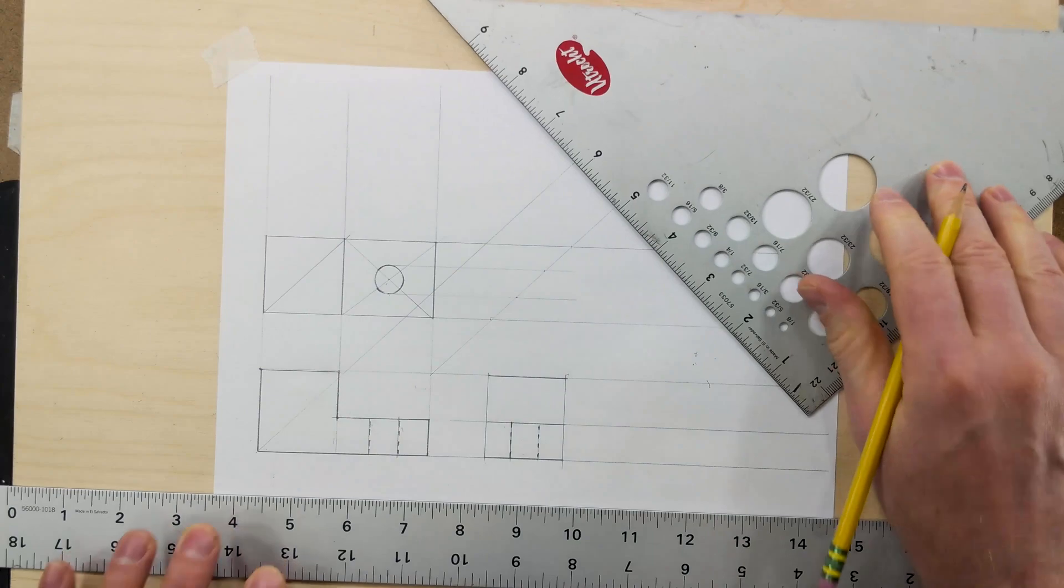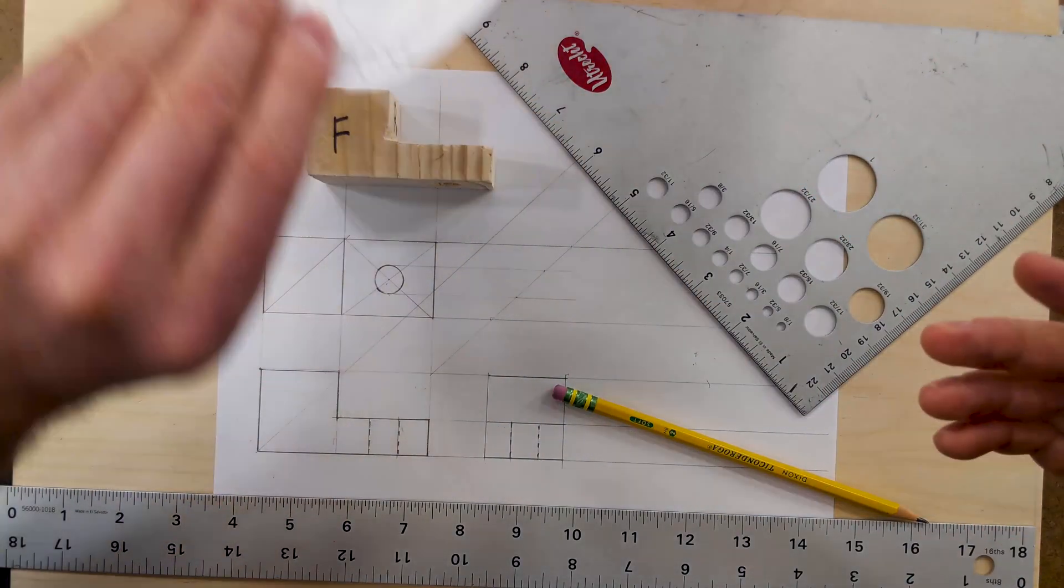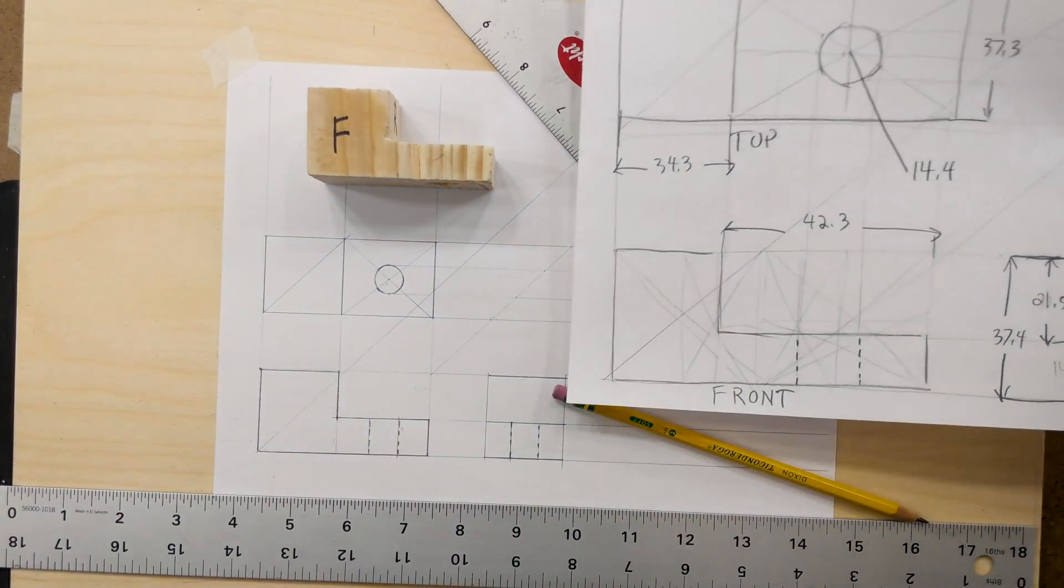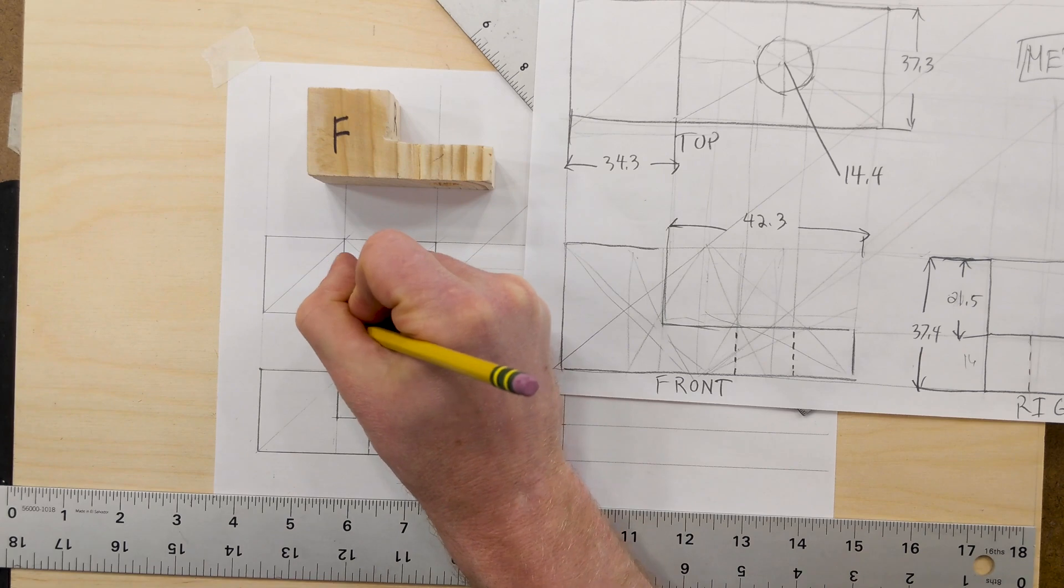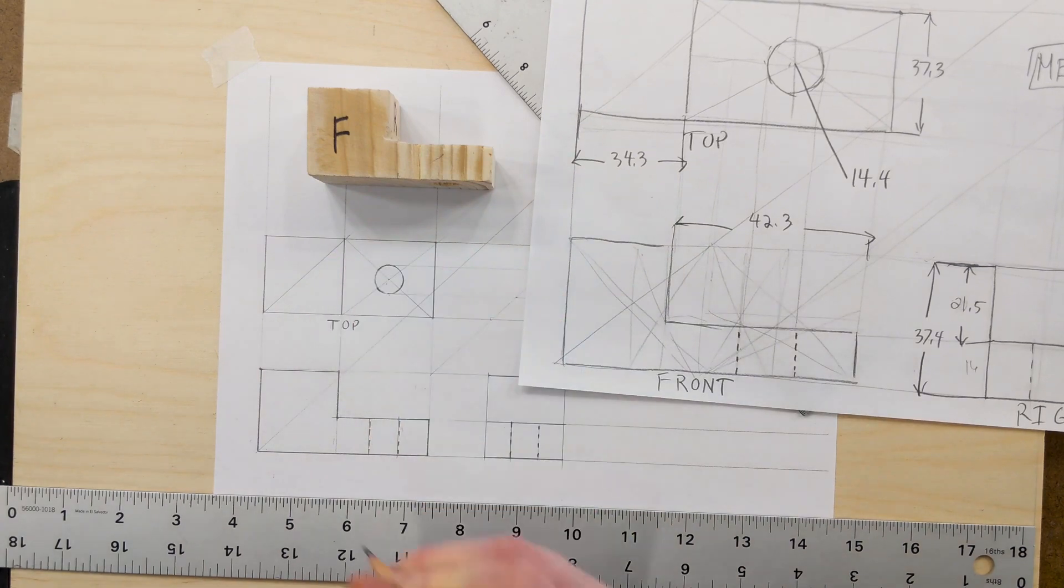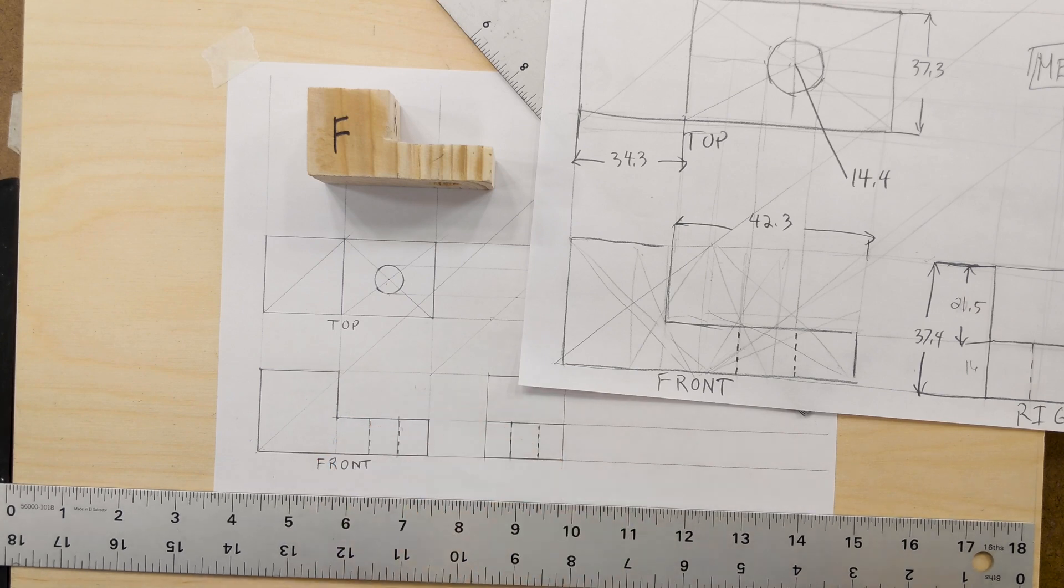Now we have a one-to-one drawing of our object. We can then go ahead and add the dimensions in, so it has all the same things. We can also label our views. This will be top. This will be front. And this will be right.